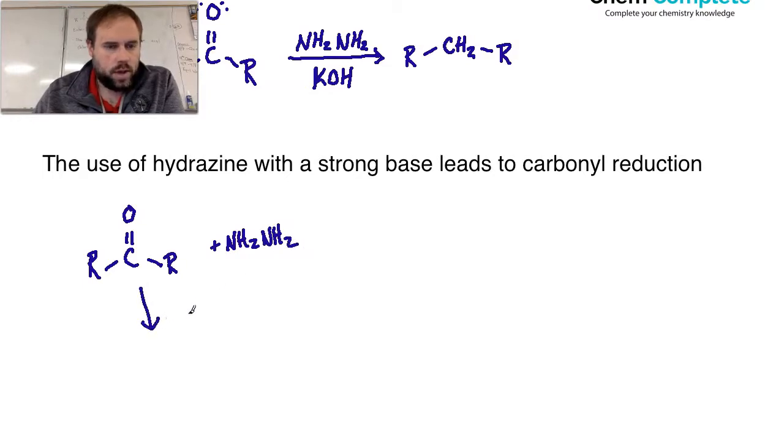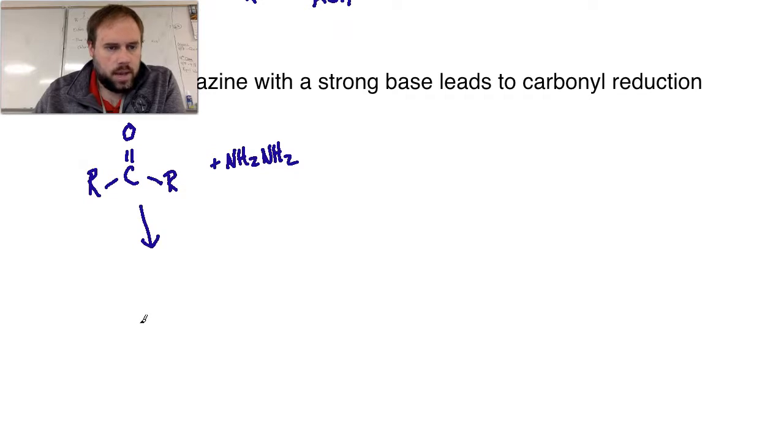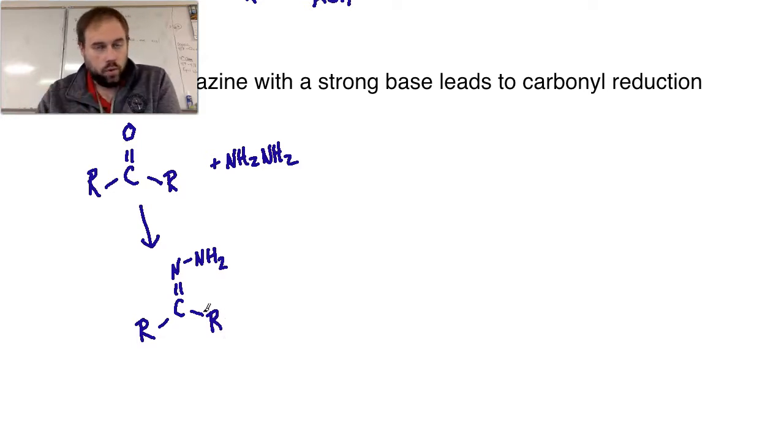What we would end up with is going to be the resulting imine, which would be a double bond to the nitrogen, and then that would have the NH2 group that is still coming off of it right here. So that's going to be the first step. From here, we can then move forward and show you the actual Wolff-Kishner part of the reaction that's going to be occurring.